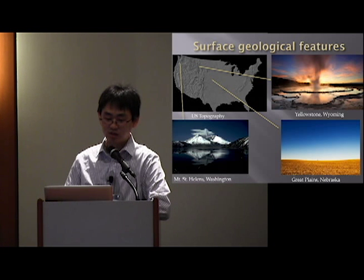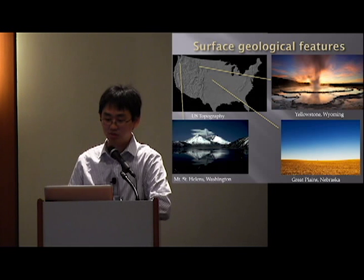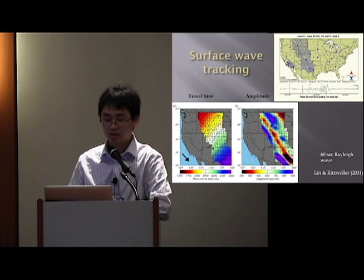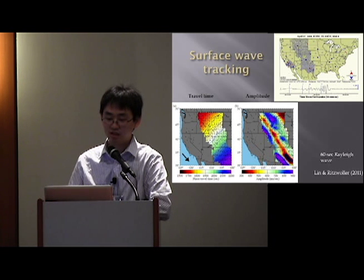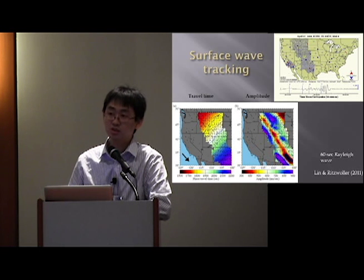When we go across the Front Range to the Eastern side, suddenly we're in a much flatter regime. It's nice to be able to understand what's going on in the lithosphere structure and how it relates to these geologic features. Surface waves provide a very direct tool to measure this type of lithosphere structure because surface waves, in general, propagate near the surface. With the USArray, we can now track the wave field across this array nicely — probably the first time we can track surface waves coherently across such a large area.